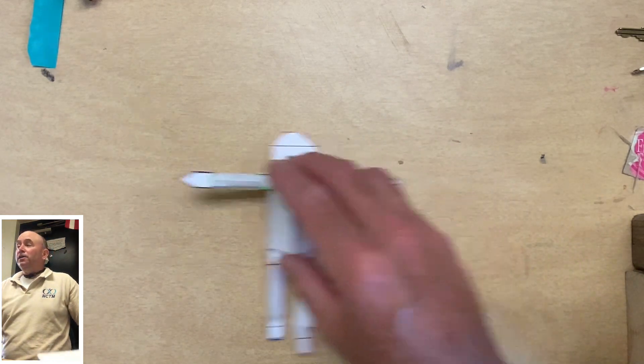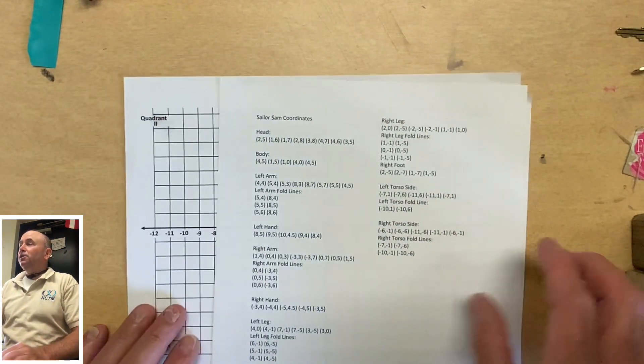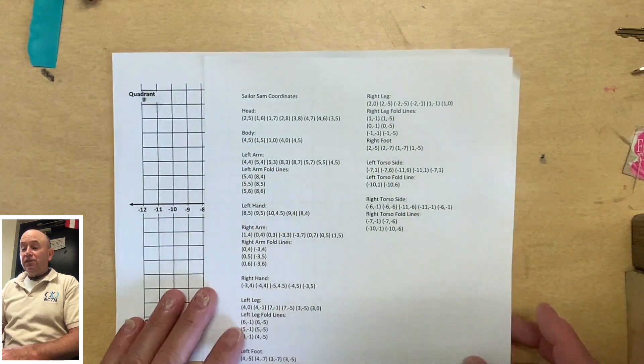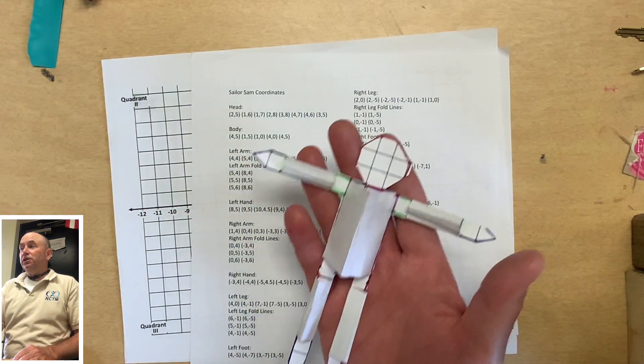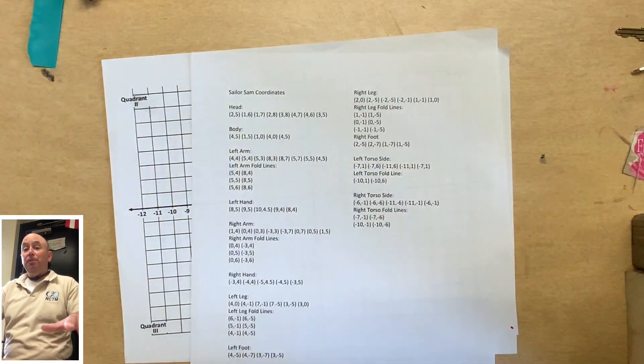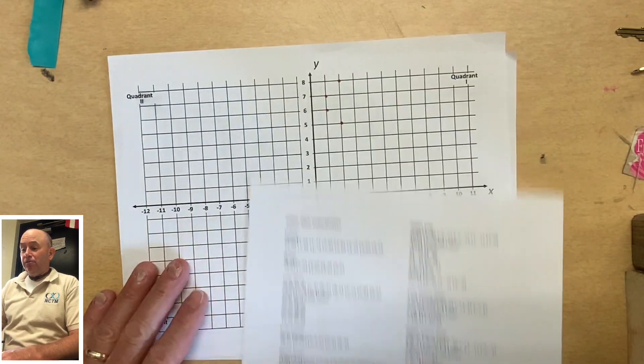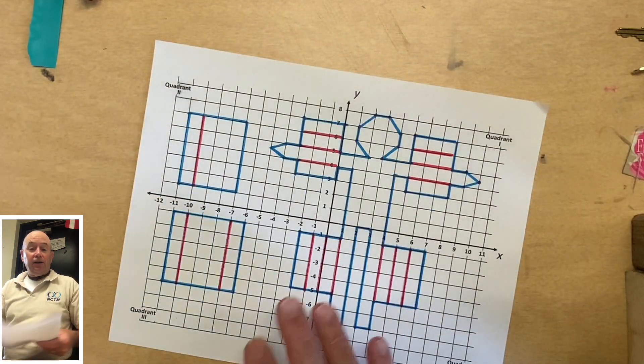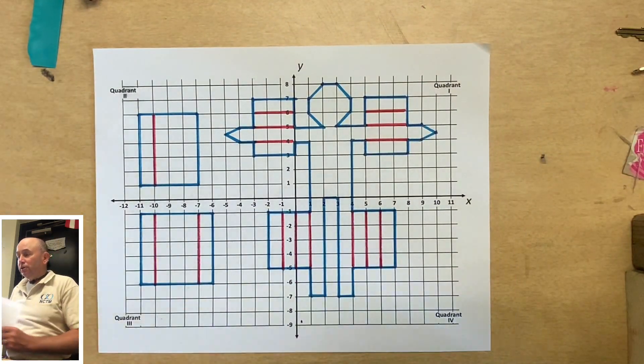At this point, you should have taken your coordinates and your coordinate plane, and you should have designed Sailor Sam. He should be flat on paper, ready to cut out. If he's on your coordinate plane and ready to cut out, this is what he looks like.